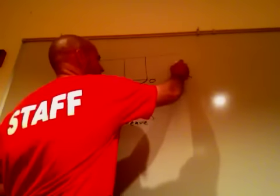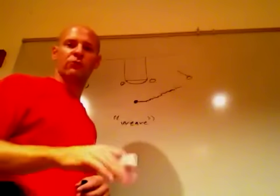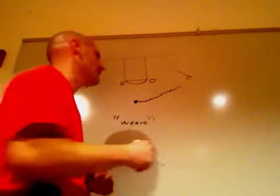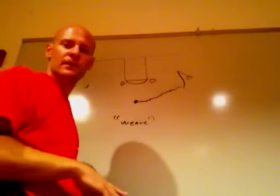When you get dribbled at, if the defense is overplaying, you basket cut. Automatic rule. That's what we teach with any of our offenses. Let's say the defense sag, then we're coming for a dribble handoff.